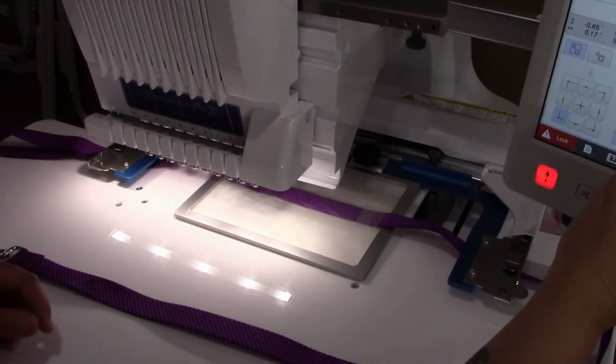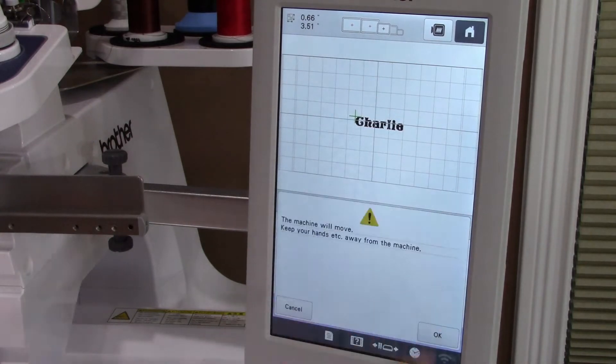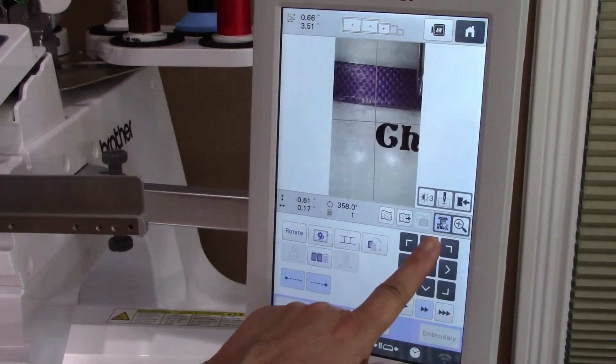Okay, my leash is in the Durkee Easy Frame. The font that spells out the word is on the screen, we're doing Charlie, and I've pressed the live view camera.